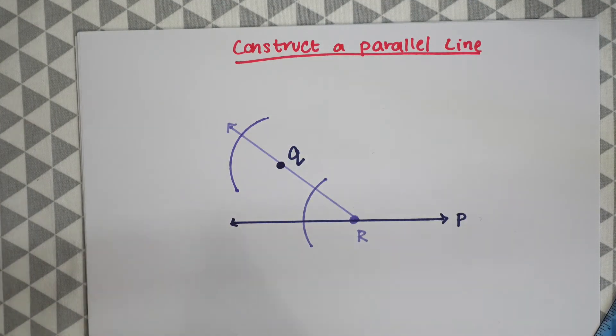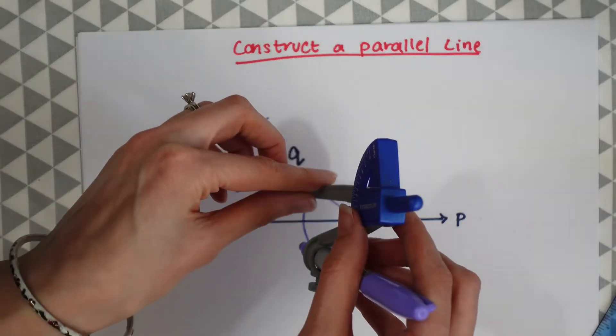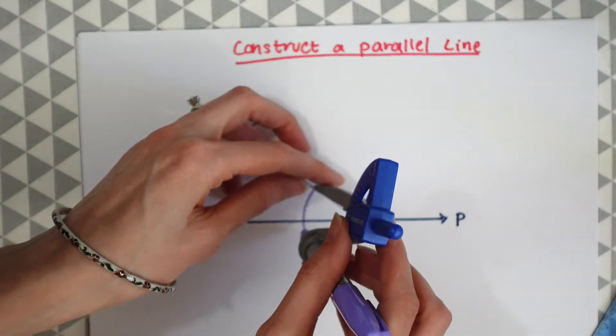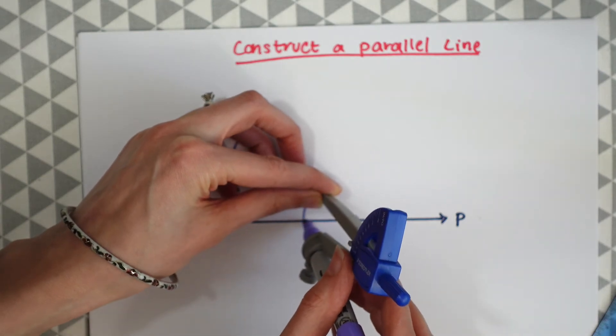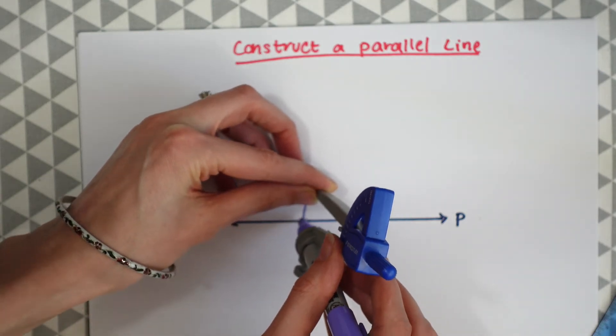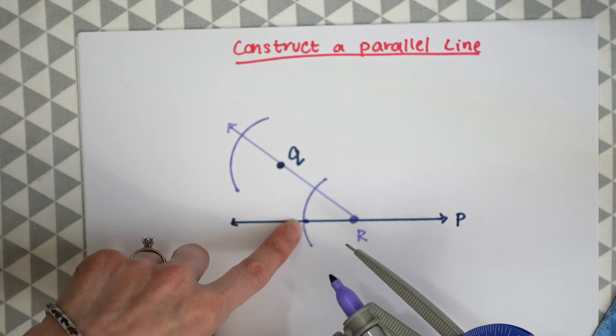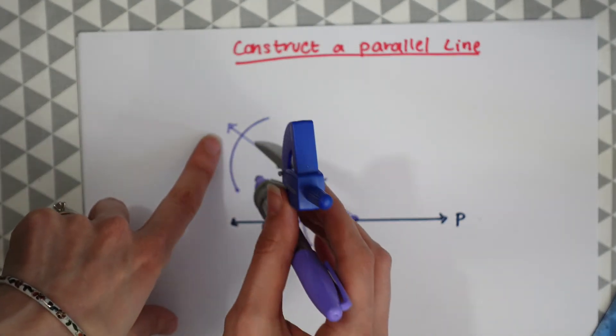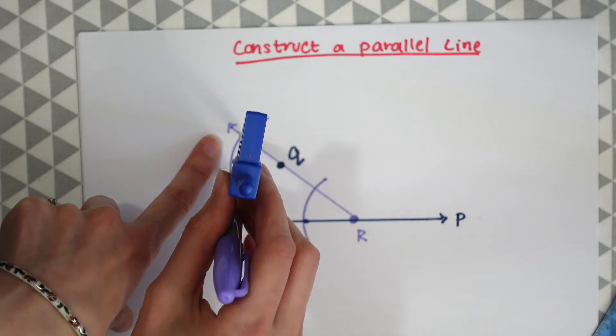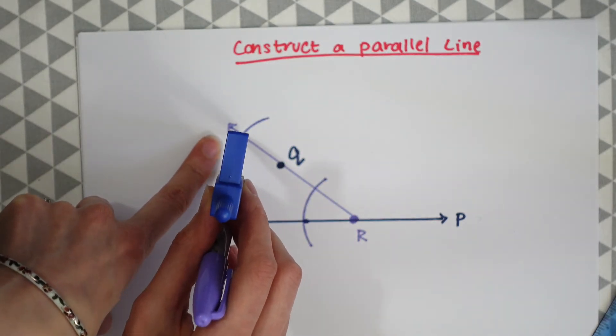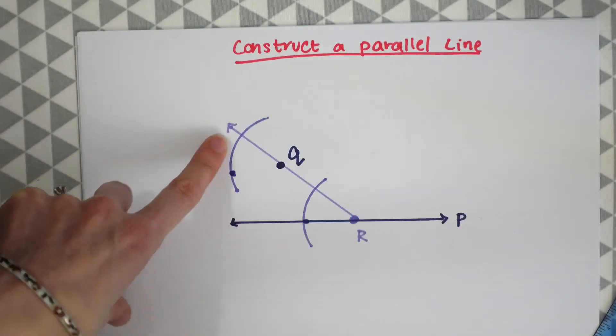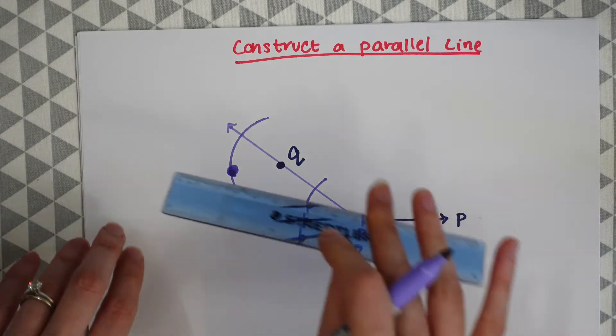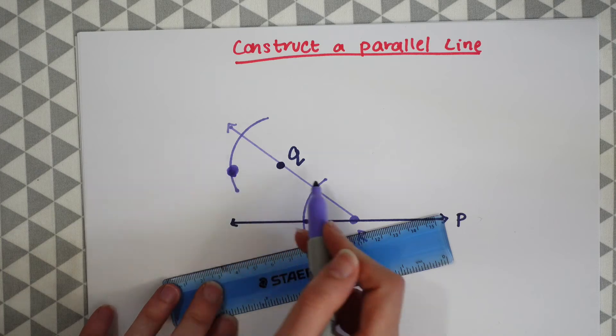Okay so now we can measure this angle. I'm going to put the point on the line we created and measure the arc we created and see that our angle is about this size and I'm going to keep this. Now I'm going to go to this other arc we made over here and then mark that with a point, make this a little bit bigger and now we can connect our lines.